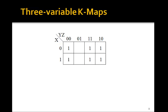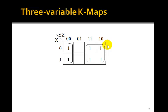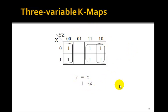How many circles here? Here are four already. What about these? Remember this edge is connected to this edge. We want to make the circles as big as possible to get the fewest variables per term, so we wrap around like this. What goes away? Both x and z go away in one group, leaving y. In the other, x and y go away, leaving not z. So the whole thing is y or not z.